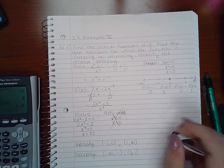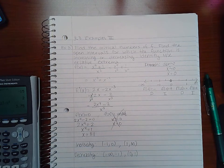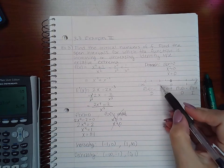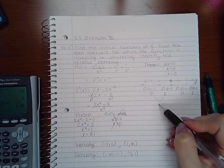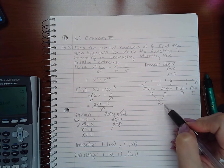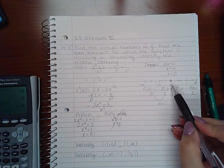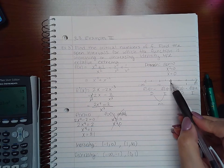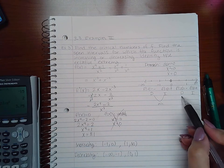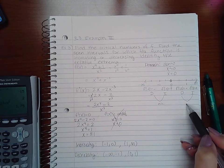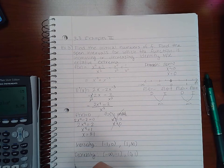Now I'll find the relative maximums and minimums. Around negative 1, the function goes from decreasing to increasing, so this is a minimum. Zero cannot be an extremum because it's not in the domain. Around 1, the function goes from decreasing to increasing again, so this is also a minimum. There are no maximums.